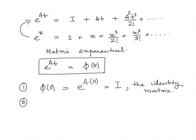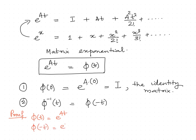Now we have the second property: phi_inverse(t) = phi(-t). The proof goes like this: phi(t) is nothing but e^(At), so phi(-t) is nothing but e^(A·(-t)), and hence phi(-t) can be written as e^(-At), that is nothing but (e^(At))^(-1).